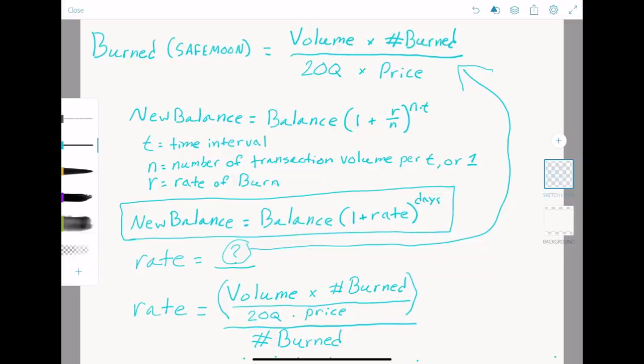From here we get this messy equation that rate is equal to the volume times the number of tokens in the burn wallet, divided by 20 quadrillion times price, and then we have to divide this entire answer by the number of tokens in the burn wallet again. Well, what happens here? The number of tokens in the burn wallet cancels out, leaving us with a rate that only relies on volume and price. Now we see that rate is equal to volume divided by 20 quadrillion multiplied by price.